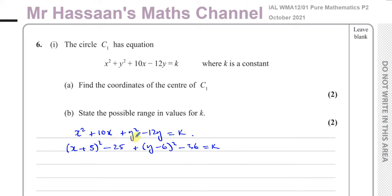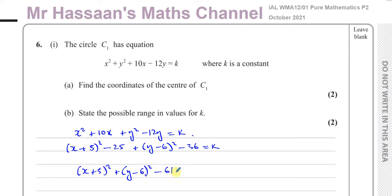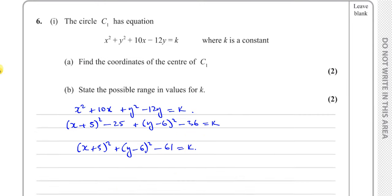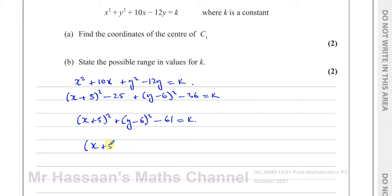Similarly for the y terms, we take half of the coefficient of y, which is minus 6. If you expand y minus 6 squared it gives you y squared minus 12y, plus 36. We don't want the plus 36, so we take away 36. So we end up with x plus 5 squared plus y minus 6 squared minus 61 equals k, which we can write as x plus 5 squared plus y minus 6 squared equals k plus 61.